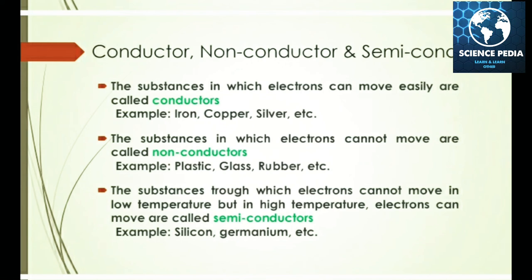Substances through which electrons cannot move at low temperature but can move at high temperature are called semiconductors, such as silicon and germanium.